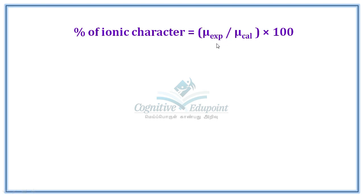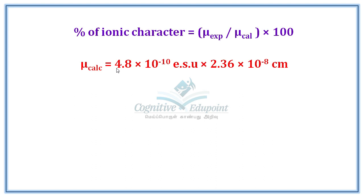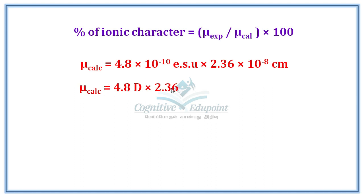Taking the values: the experimental value from the question is 8.5 Debye. The calculated value for NaCl is 4.8 × 10⁻¹⁰ ESU for one electron shift, multiplied by the bond length. So μ calculated equals 4.8 × 2.36 = 11.328 Debye. This is the calculated theoretical value.